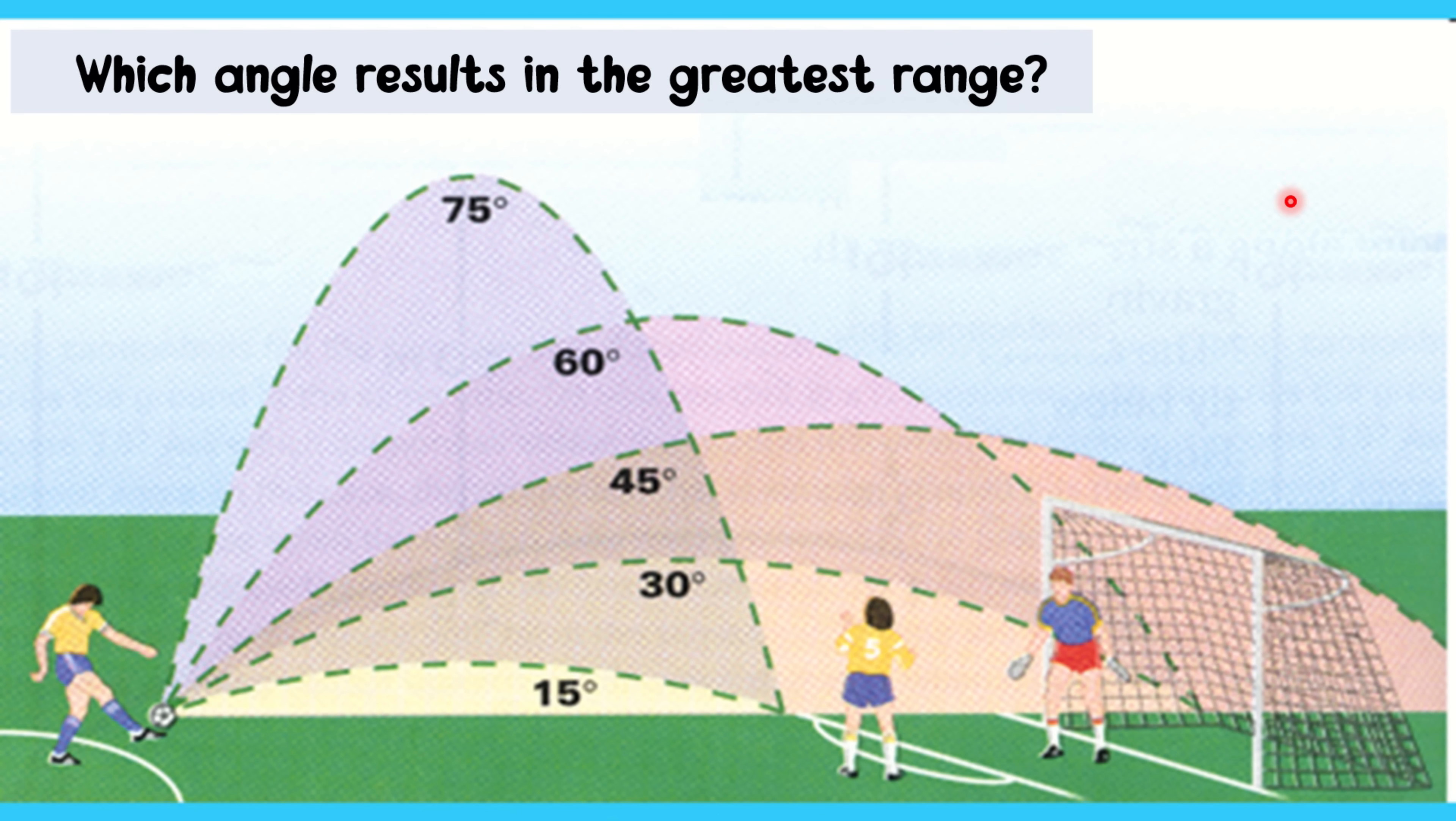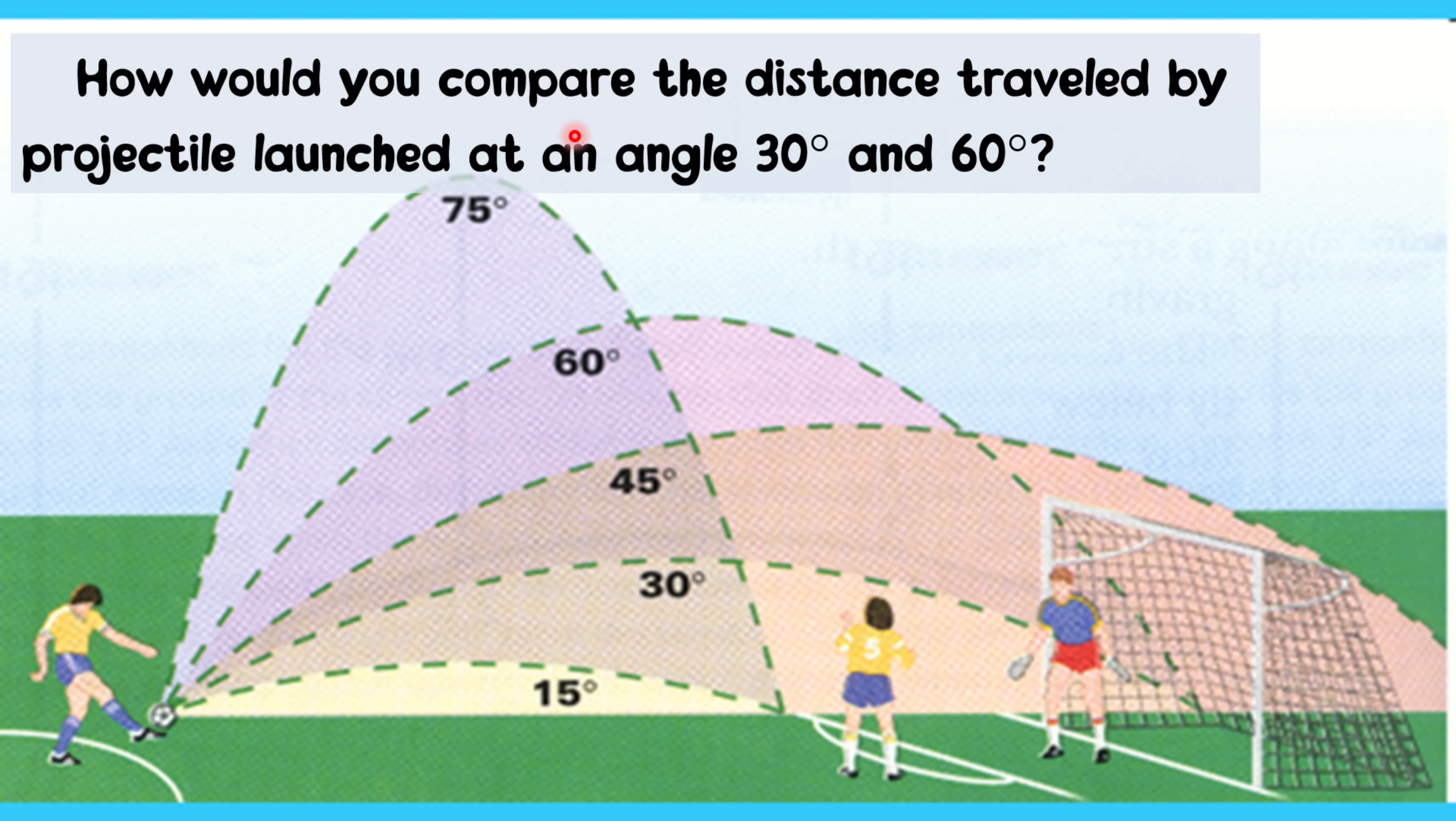Which angle results in the greatest range? When we say range, it is the horizontal displacement. And as you can see, the farthest range is in the 45 degrees angle. Next question. Which angle results in the maximum height? As you can see, it is the 75 degrees angle. How would you compare the distance traveled by projectile launch at 30 and 60 degrees? As you can see, they have the same range. Same as 15 and 75. They have the same range. This scenario that I have shown you is also an example of projectile motion launch at an angle. And these are the possible results if you launch an object at different angle. Take note class.